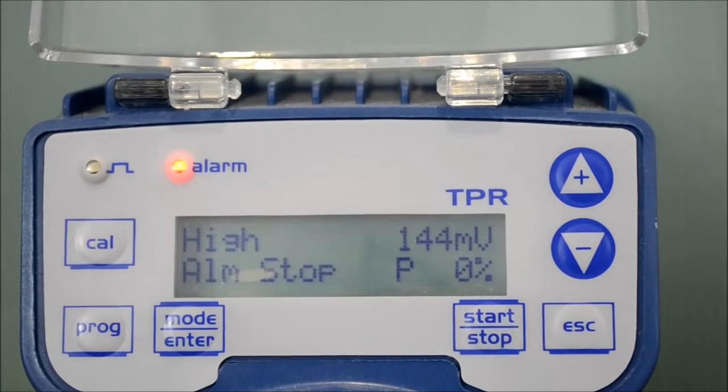The Tecna Evo TPR pump is a probe controlled digital solenoid dosing pump. It can be used to measure and control either pH or redox by connecting the appropriate probe to the BNC connection.